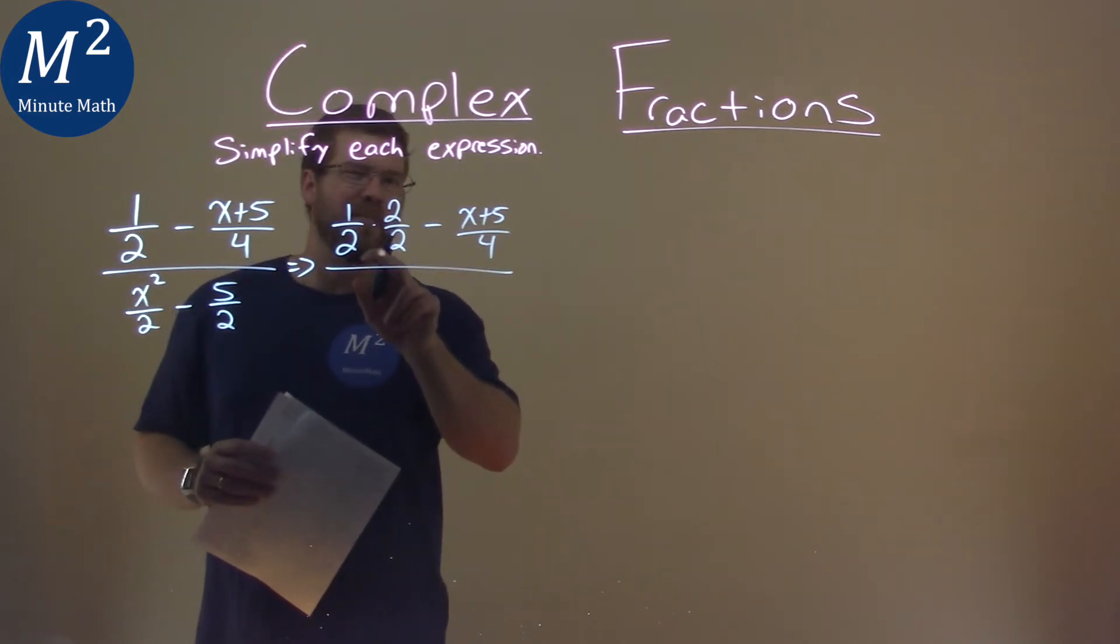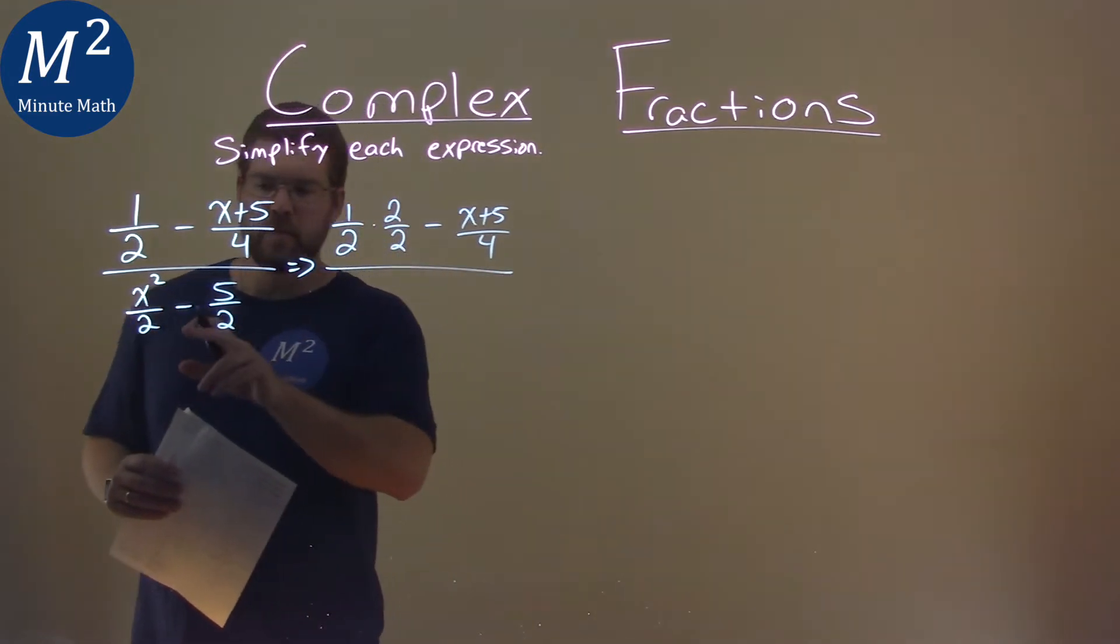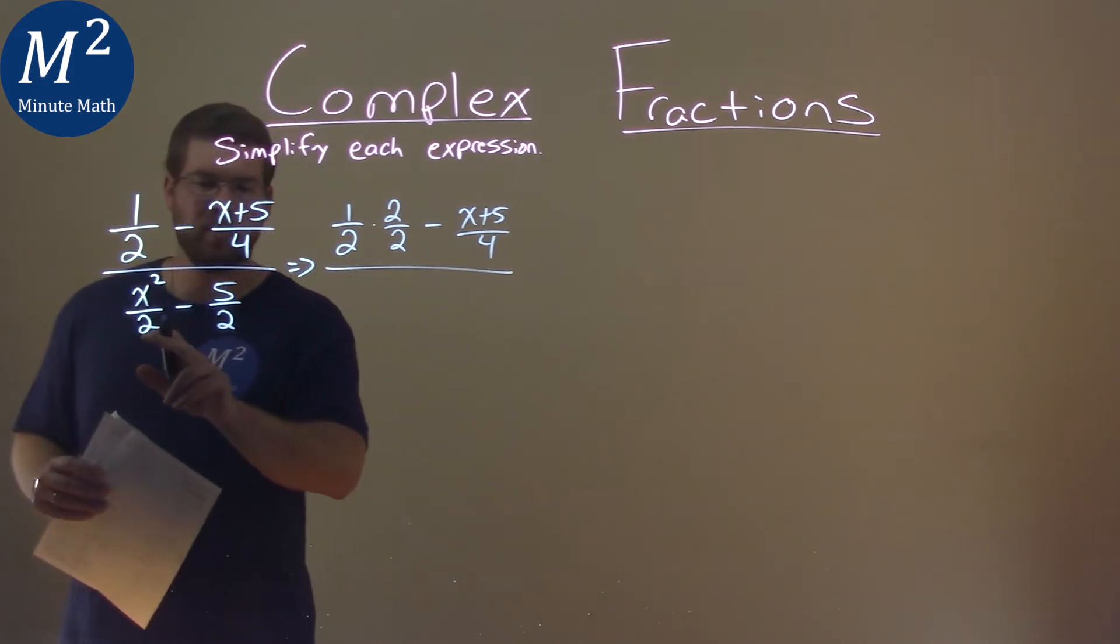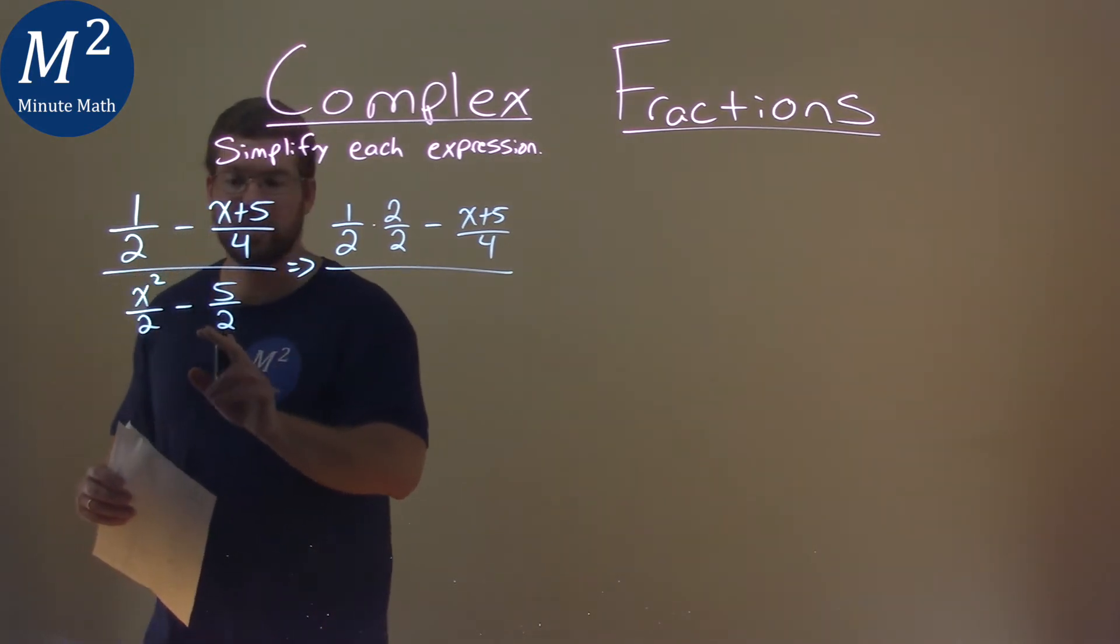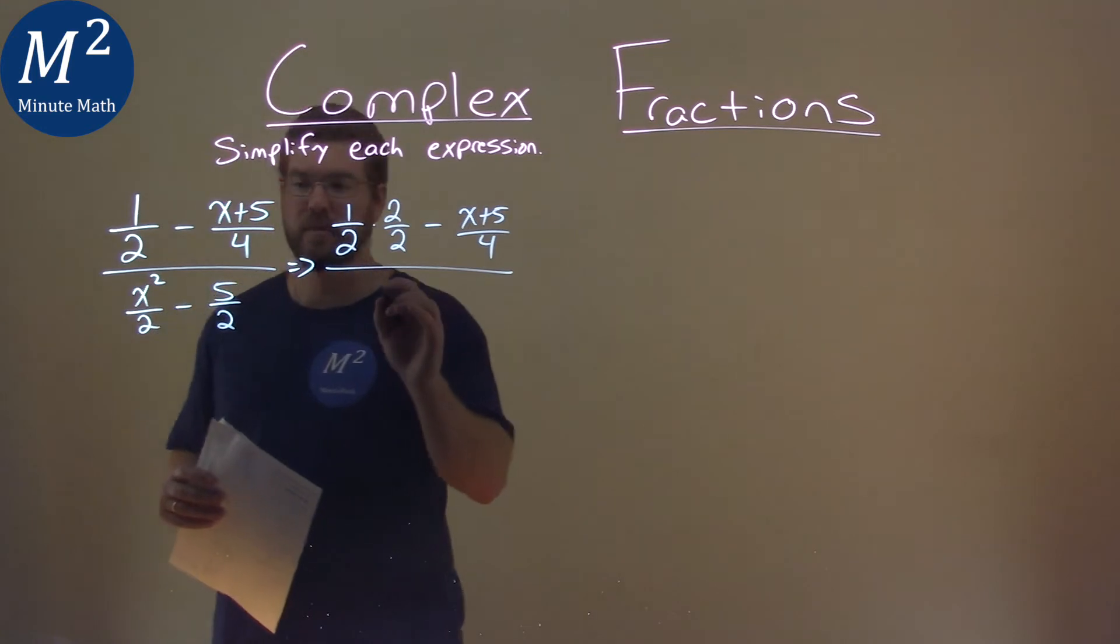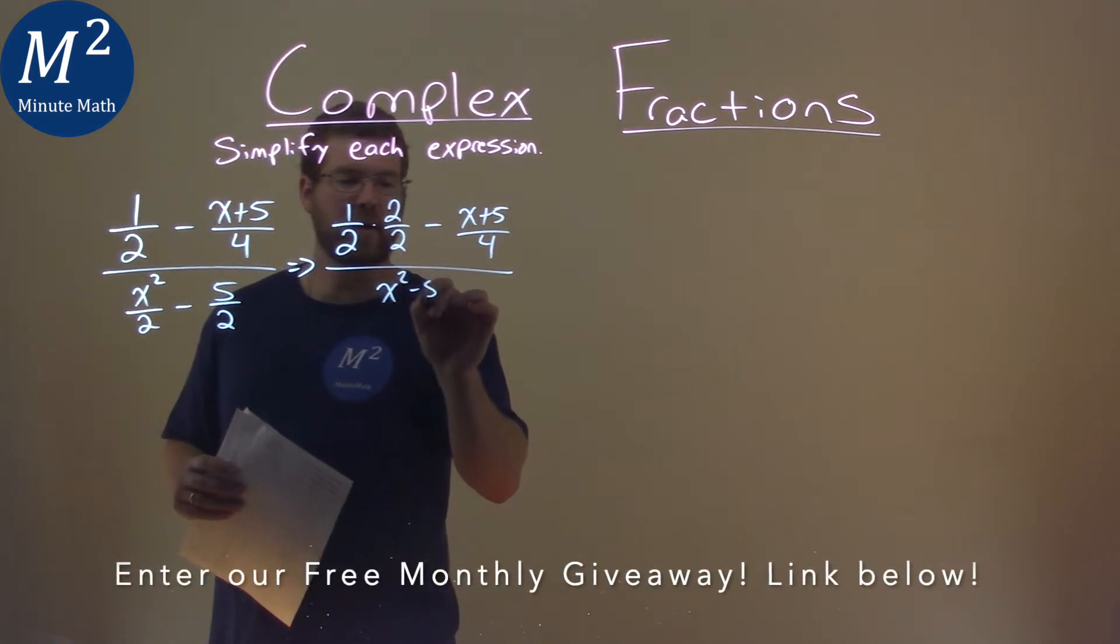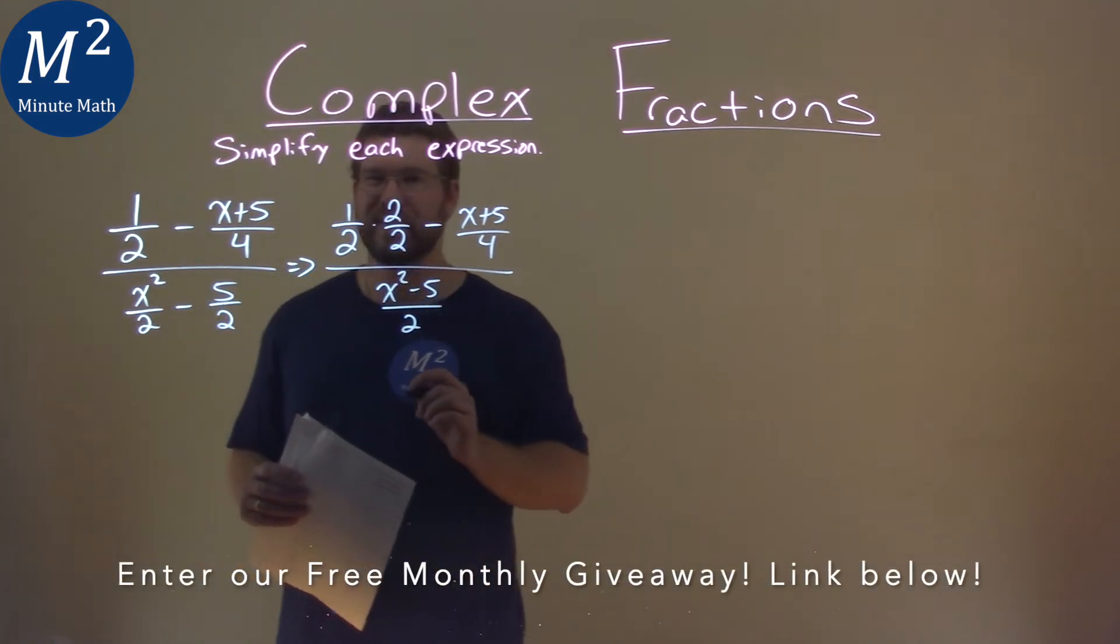So I want to have a common denominator when I'm adding them together. This denominator down here both already have a 2 in the denominator. So we actually can subtract the 2. We have an x squared minus 5 over 2.